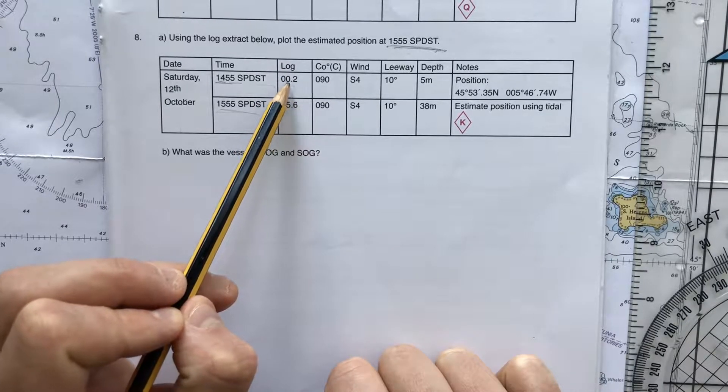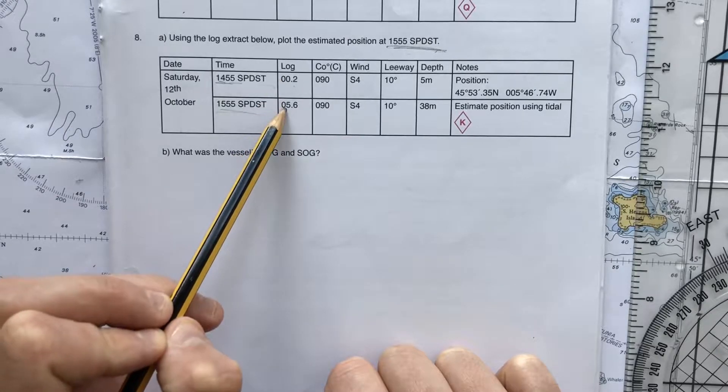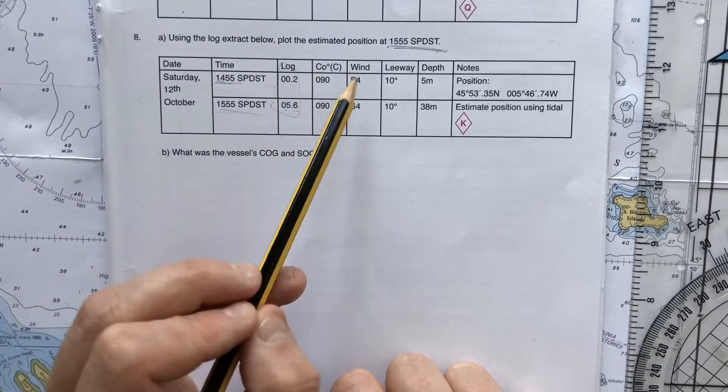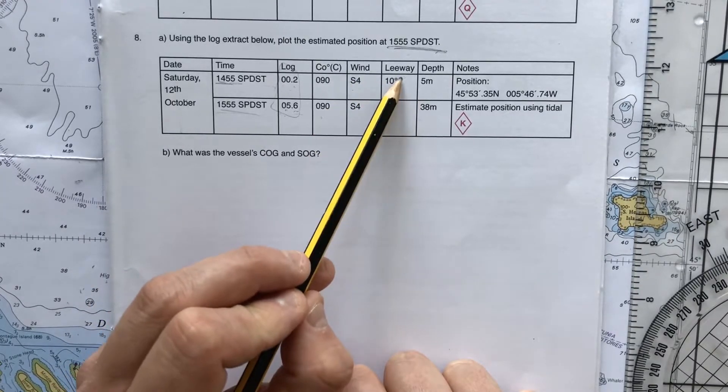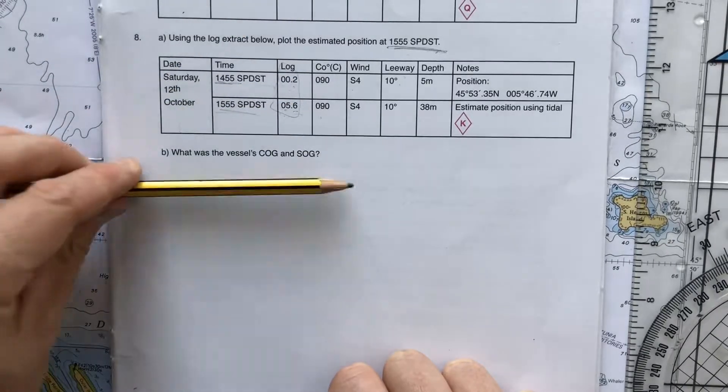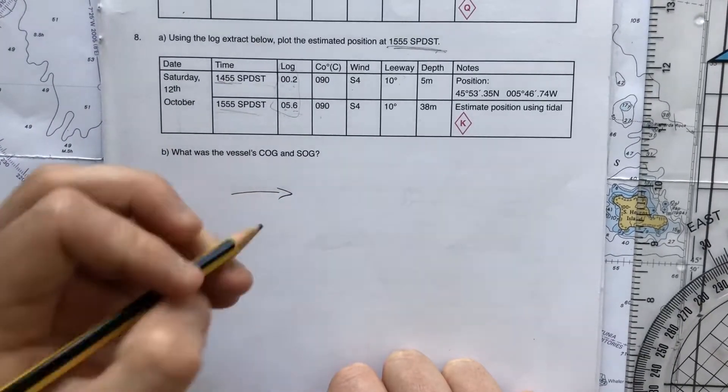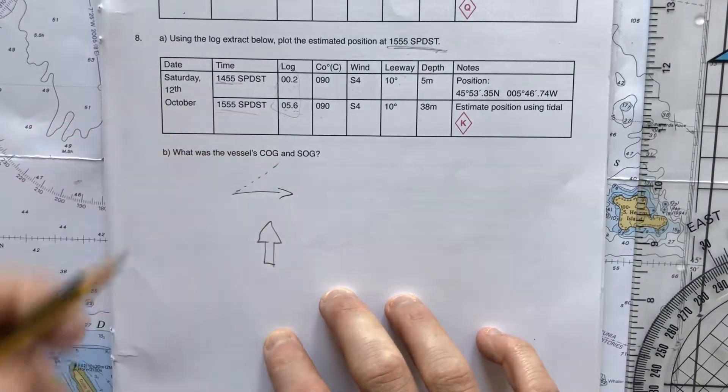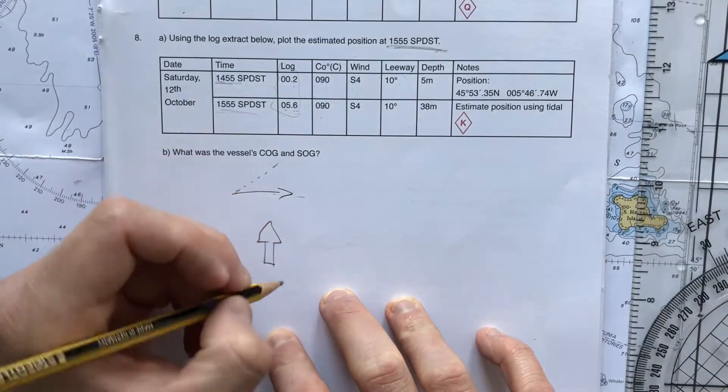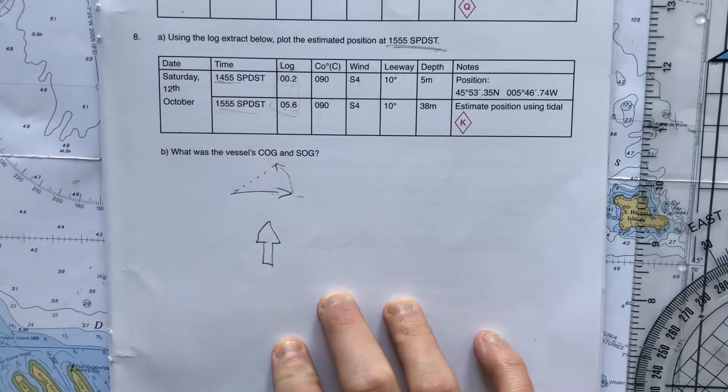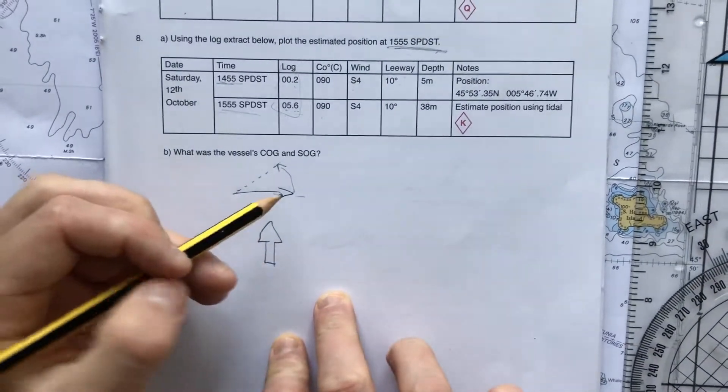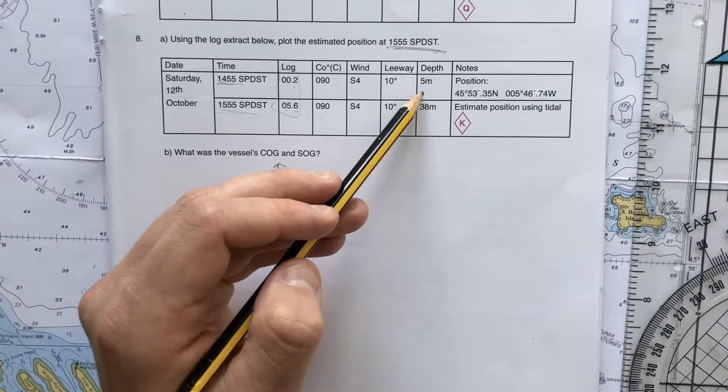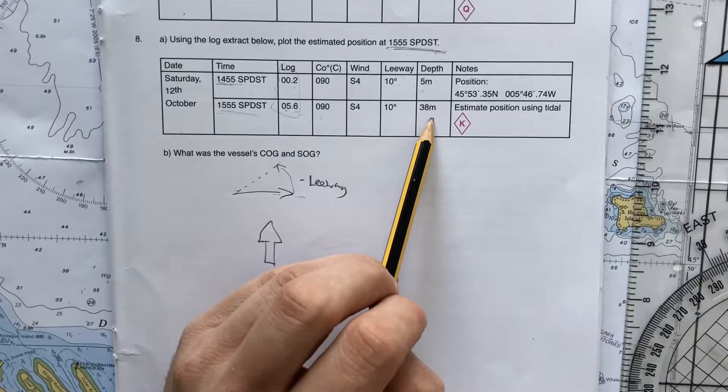The log - we've got 0.2 of a mile logged already, so we're travelling 5.4 miles during this passage through the water. Course is 90 degrees. The wind is a southerly force four and we have leeway of 10 degrees. So if we're heading on 90 degrees, the wind is here and we have 10 degrees of leeway. The leeway is going to be pushing us to the north, so we're on a starboard tack here. The starting depth is five metres, and where we finish up it should be 38 metres.